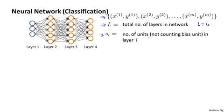So for example, we would have S1 which is the input layer equals 3 units, S2 in my example has 5 units, and the output layer S4 which is also equal to SL because capital L is equal to 4. The output layer in my example on the left has 4 units.